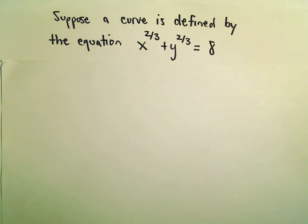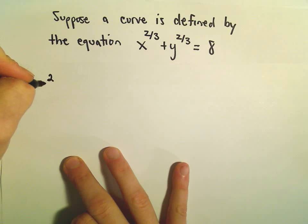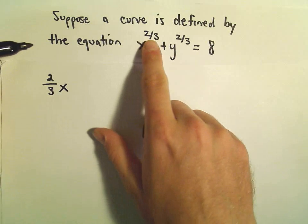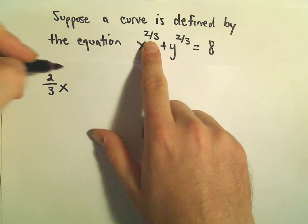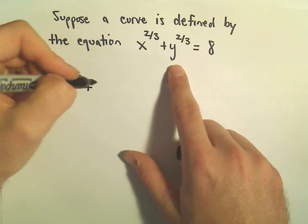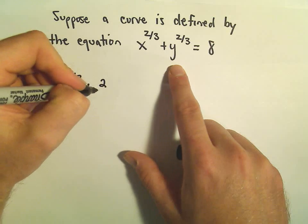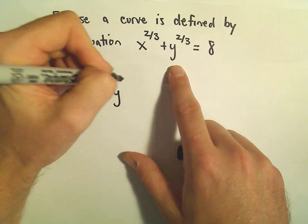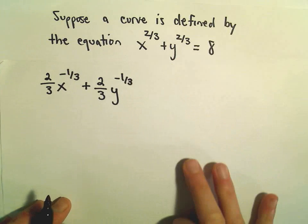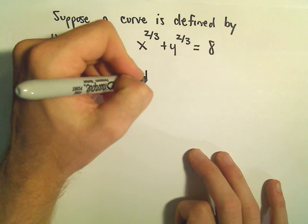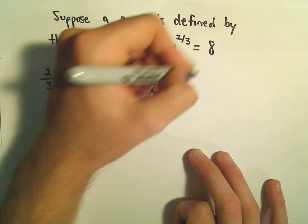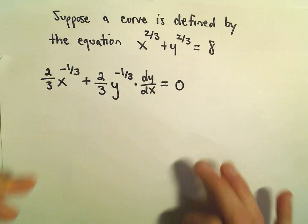To start this off, we're just going to have to take the derivative. We'll get two-thirds x to the negative one-third, plus we'll do the same thing for the y — we'll get two-thirds y to the negative one-third. Since we're taking the derivative of something involving y, we have to tack on our dy/dx, and then the derivative of eight is just zero.